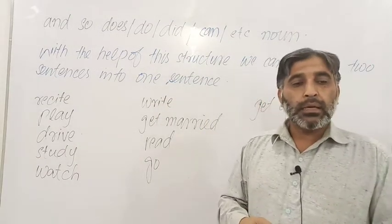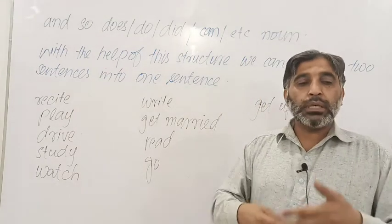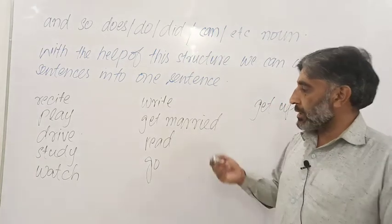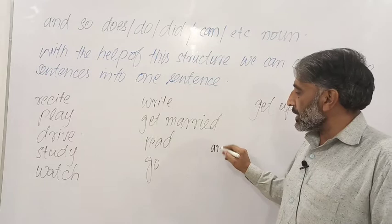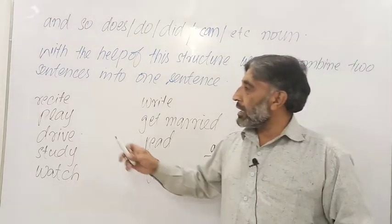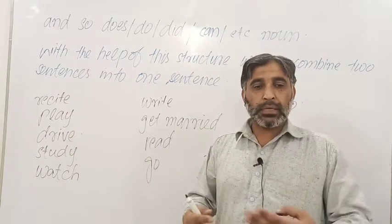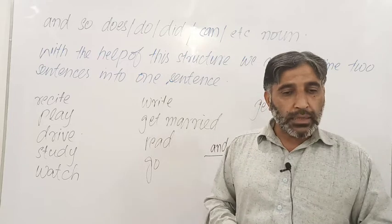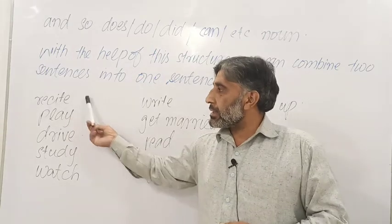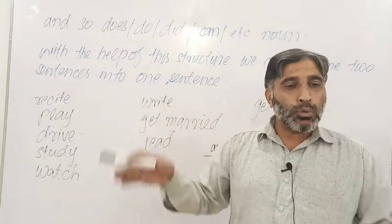ہم دو جملوں کو ایک جملے میں combine کر سکتے ہیں اسی structure کے ذریعے سے۔ دو تین طریقے ہیں جس کے ذریعے سے ہم دو جملوں کو ایک جملے میں اکٹھا کر سکتے ہیں۔ Conjunction 'and' یا 'but' کے ذریعے سے بھی ہم کر سکتے ہیں۔ For example: Bilal recites the Holy Quran, he plays cricket — دونوں کام کرتے ہیں — تو ہم کہتے ہیں Bilal recites the Holy Quran and plays cricket۔